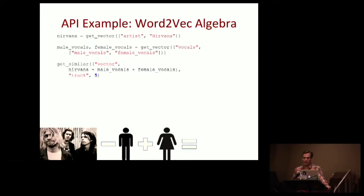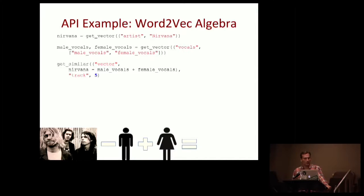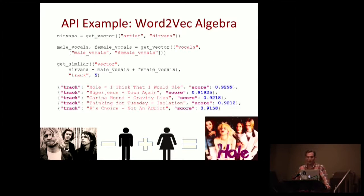Here's a particularly cool example. I grew up in the mid-90s and wondered what Nirvana would sound like if Kurt Cobain wasn't in the band and instead they had a female singer. We can actually do that in this vector space: take the vector for Nirvana, subtract the male vocal vector, add the female vocal vector, and score against tracks. The results made intuitive sense to me, but you can be the judge.